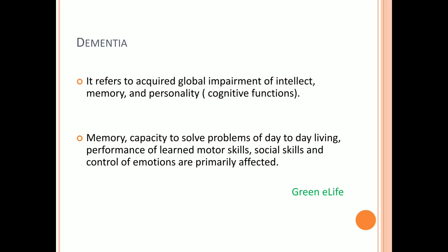What is dementia? Dementia refers to global impairment of intellect — meaning total imbalance of intelligence — and memory and personality. These are altogether called cognitive functions. It also affects memory capacity, ability to solve problems of day-to-day living, performance of learned motor skills, social skills, and control of emotions.